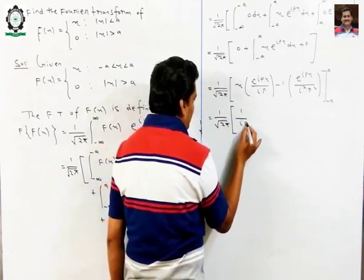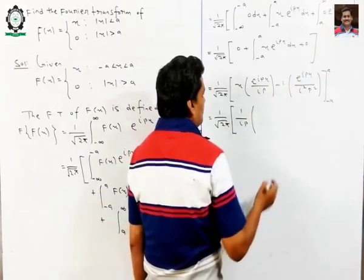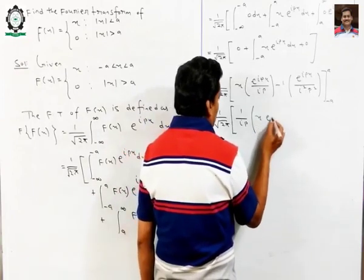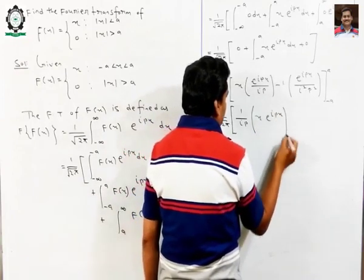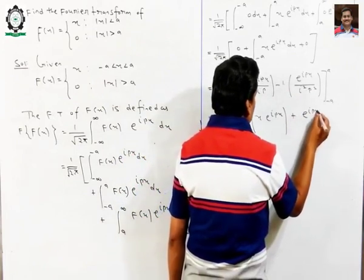I have 1 over ip with the limits, and I have a lower limit. This is x times e to the power ipx, plus e to the power ipx.